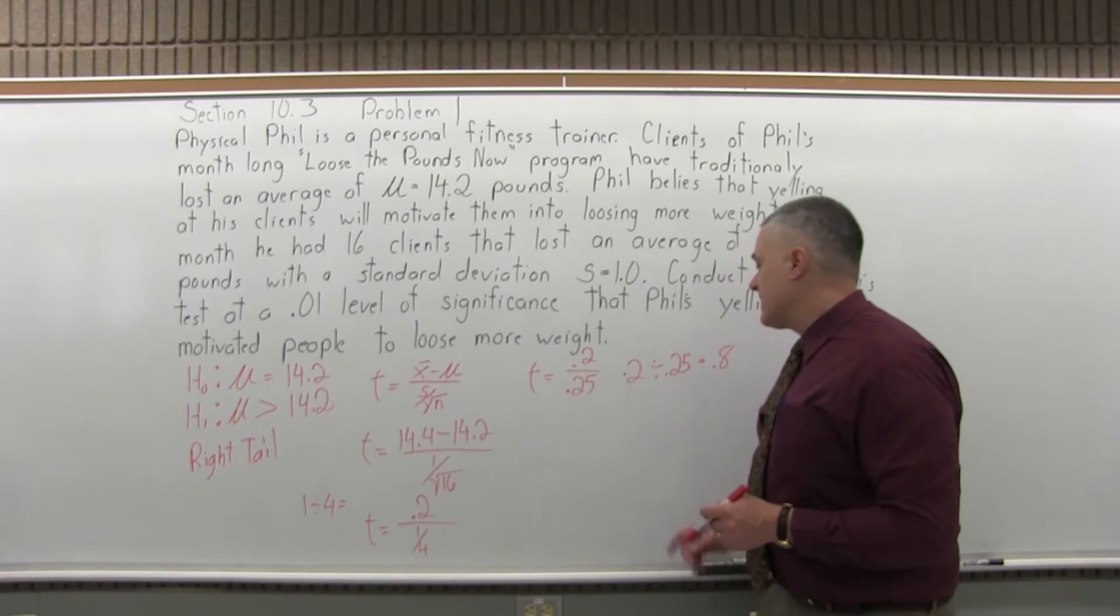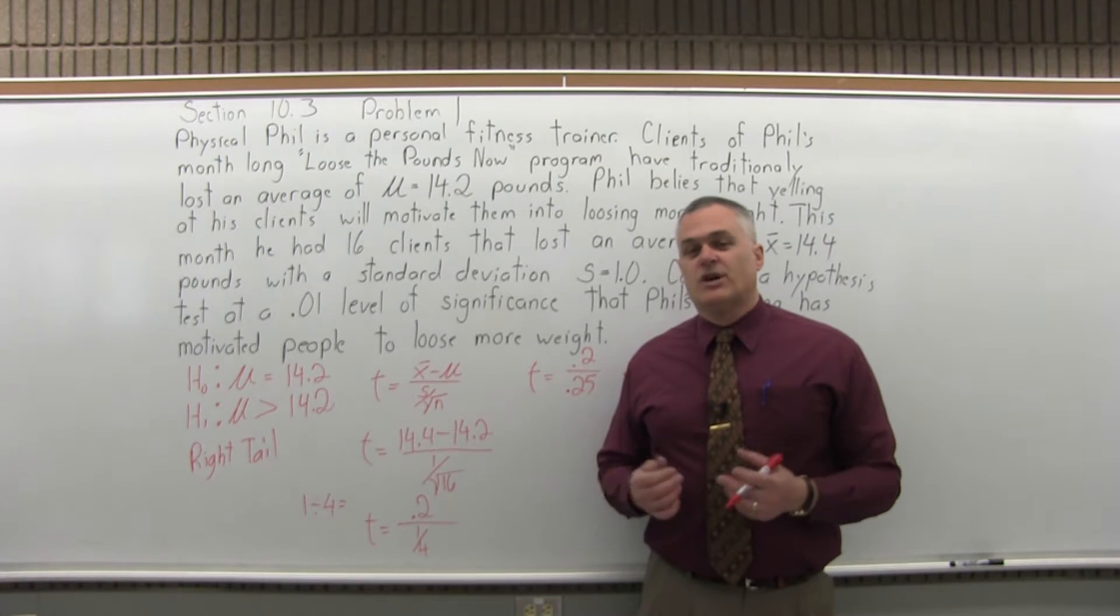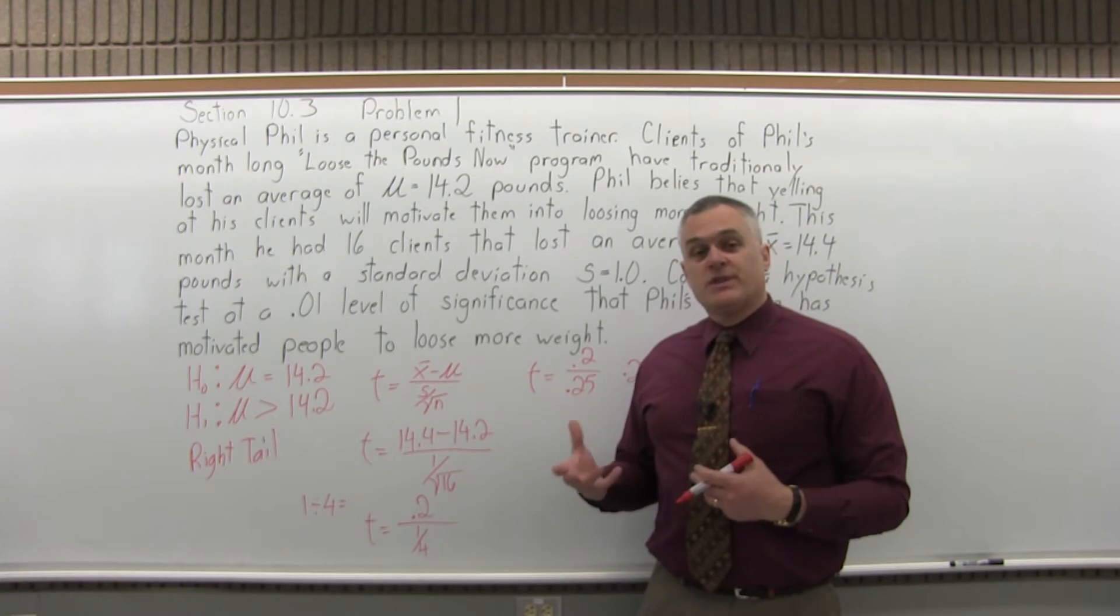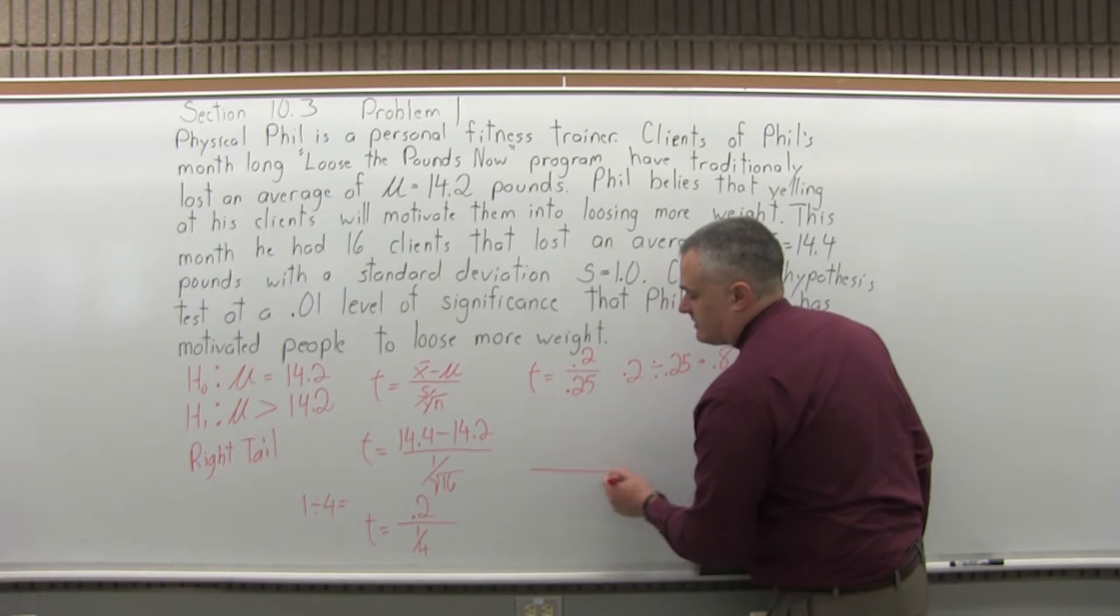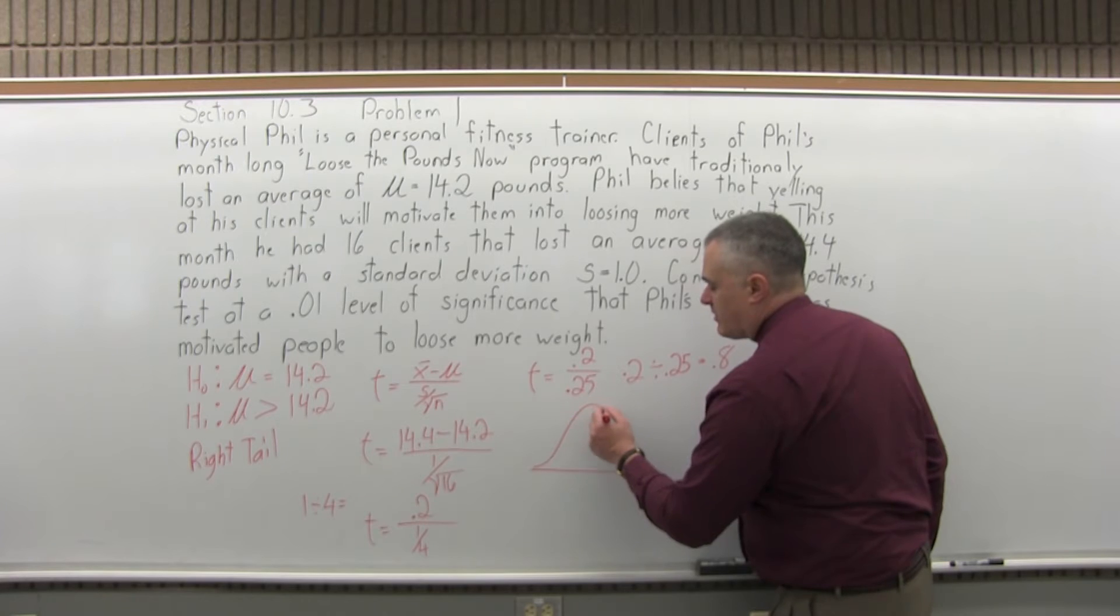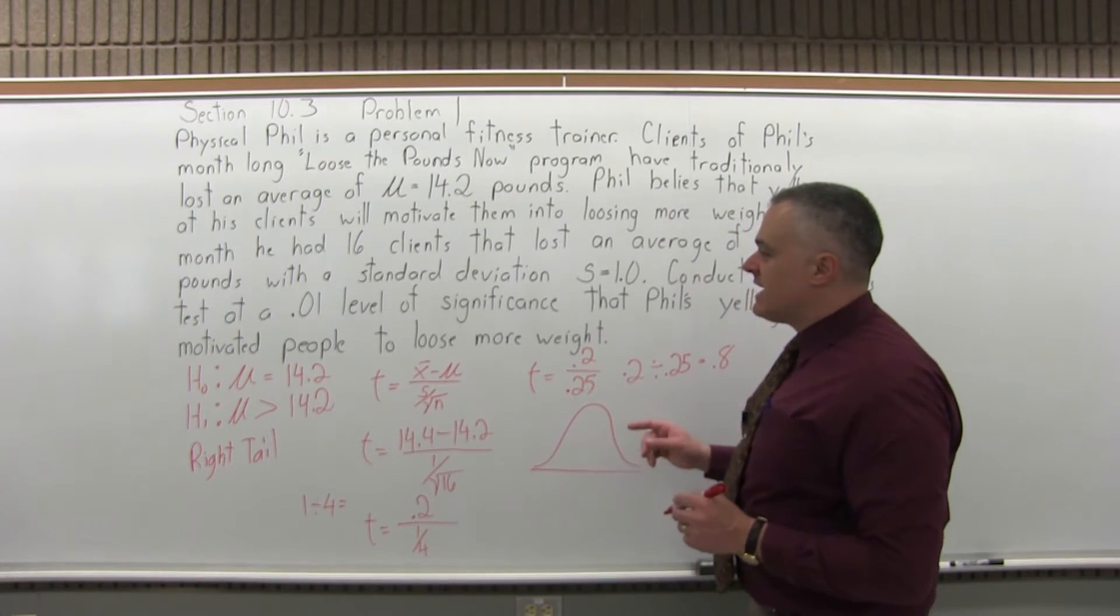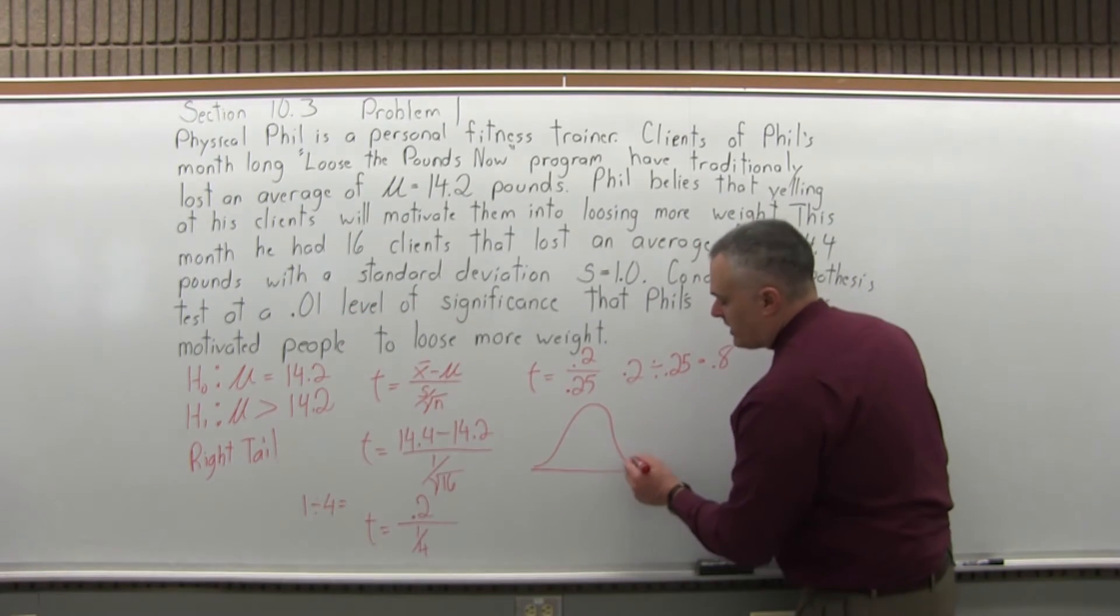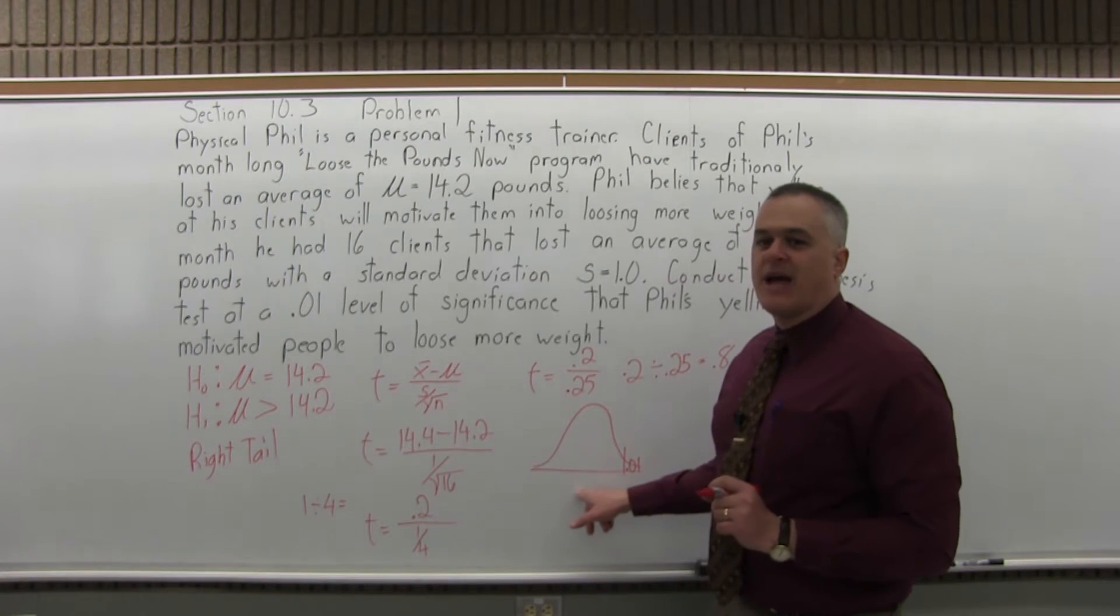Now, the question is, does 0.8 push us far enough into the critical region to cause us to reject the null? Here's the next step, step five. Determine what that critical value of T is. This is a right-tailed test. The T distribution looks very much like the normal curve, or the Z distribution, but it's a little bit special. Our level of significance is 0.01. So we want to see if we go out into the rightmost 1%, and what value of T is going to cause that to happen.